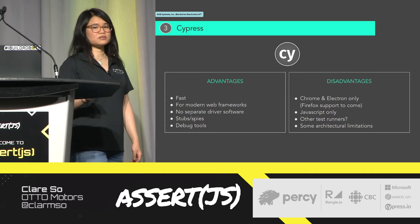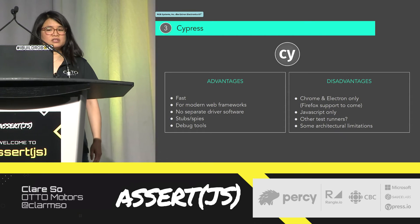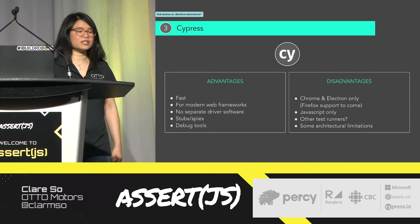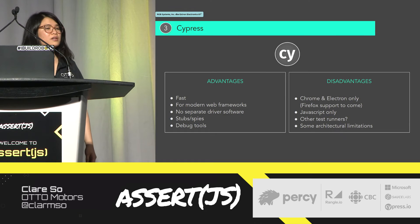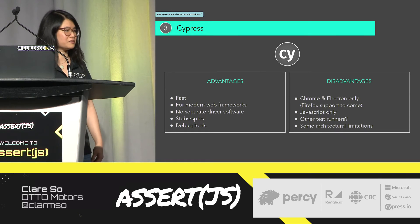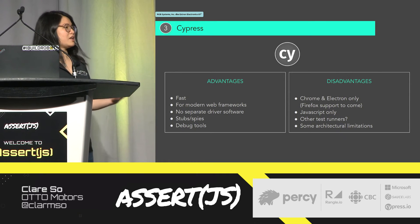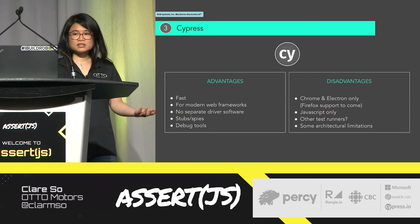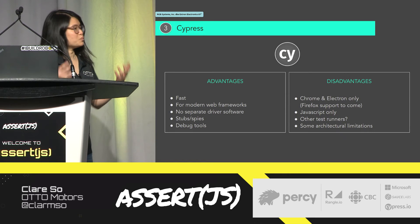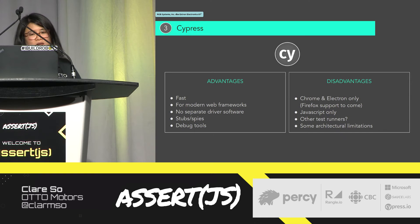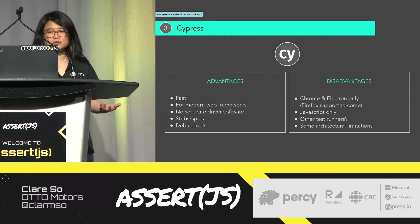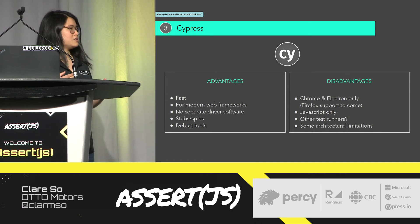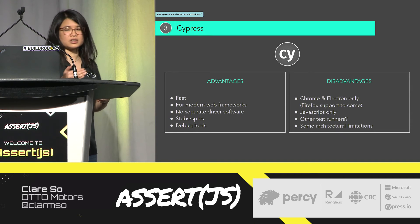The last tool I will talk about is Cypress. Cypress's design goals are similar to Puppeteer's — it is fast and it accommodates modern web frameworks. It also has access under the hood of the browser. For example, I can set the local storage of the browser for a test, and I can fake some web traffic for a test as well. Cypress is bundled with some useful tools such as a video recorder and a debugger that allows me to step back through each individual step of the test.